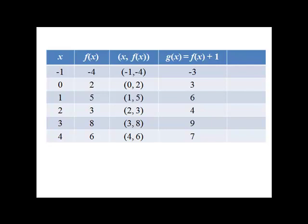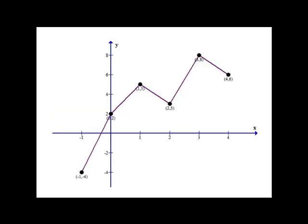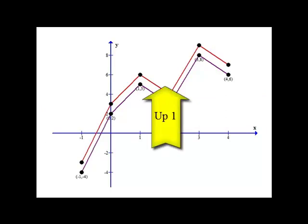If we would like to graph these two together, we can plot the points x comma g of x. Here's our original graph, and plotting our new graph, what we get is the graph shifted up one unit. Because what we did is we added 1 to all the y values.